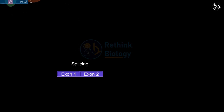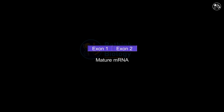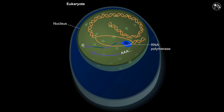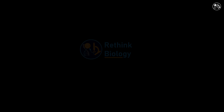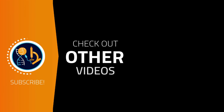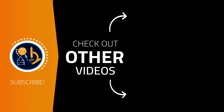The enzymes break down the RNA and recycle the bases. This process is repeated for each intron. When all introns have been removed, a mature mRNA is made. The mRNA can then leave the nucleus and be translated by ribosomes in the cytoplasm.